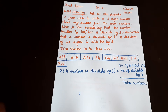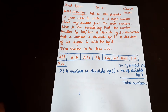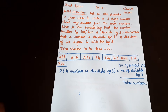So it is an activity where we can find the probability. Ask all the students in your class to write a 3-digit number. Choose any student from the room at random. What is the probability that the number written by her or him is divisible by 3? Remember that a number is divisible by 3 if the sum of its digits is divisible by 3.